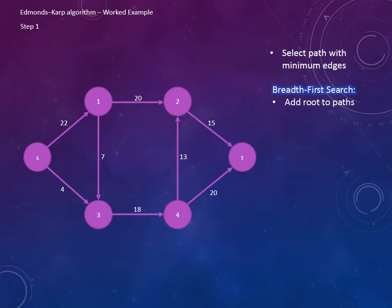The first stage of our algorithm is to find the shortest path from the source to the sink. There are multiple ways of doing this, however our algorithm, the Edmonds-Karp algorithm, uses a breadth-first search approach which we'll explain now.